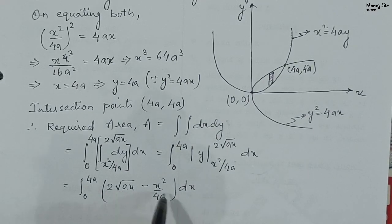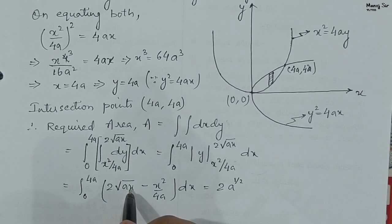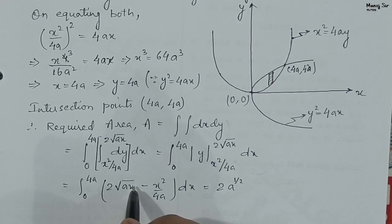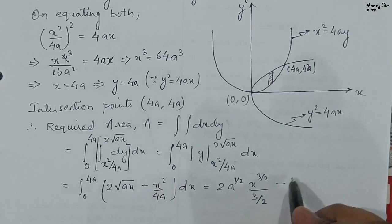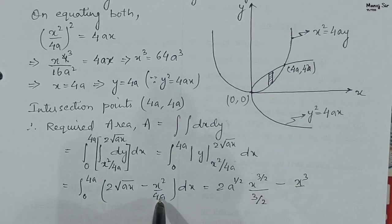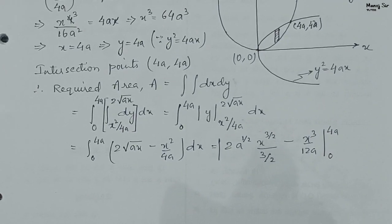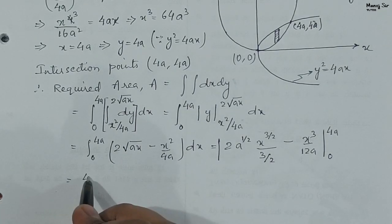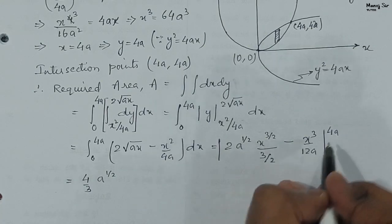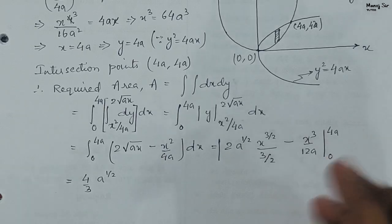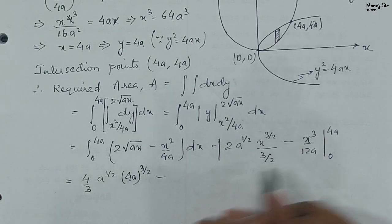Solving the inner integral, we get ∫₀^{4a} [2√(ax) − x²/4a] dx. Integrating each term with respect to x: for 2√a · x^{1/2}, the integral is 2√a · x^{3/2}/(3/2). For x²/4a, the integral is x³/(3·4a) = x³/12a. Applying the limits from 0 to 4a, and since the lower limit is 0, we only evaluate at the upper limit x = 4a, giving (4a)^{3/2} for the first term.